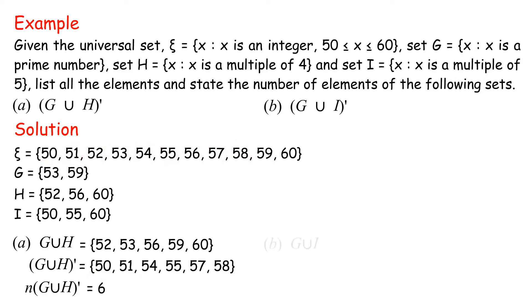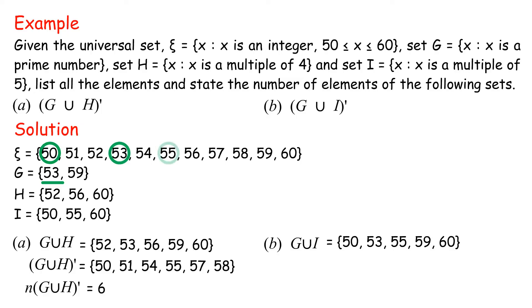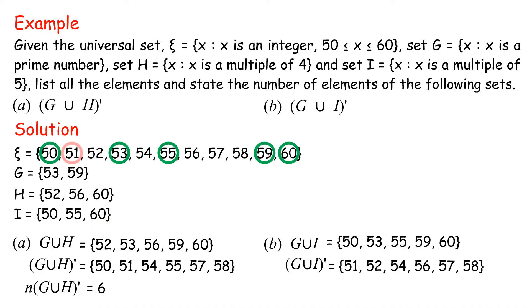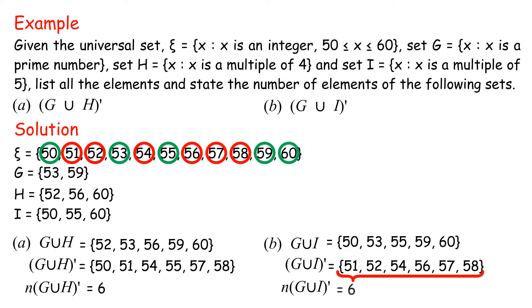B: G union I = {50, 53, 55, 59, 60}. Complement of (G union I) = {51, 52, 54, 56, 57, 58}. Number of elements of complement of (G union I) = 6.